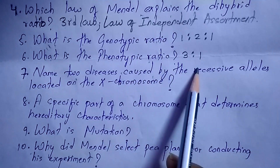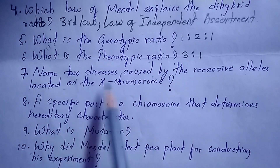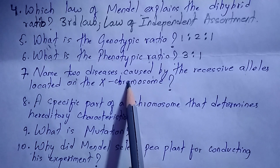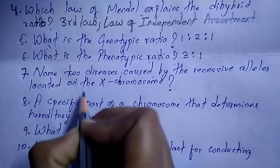Next question: name two diseases caused by recessive alleles located on the X chromosome. The answers are hemophilia and color blindness.